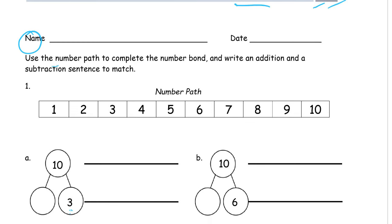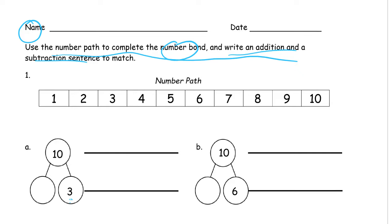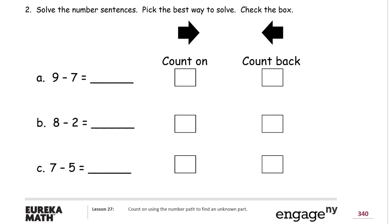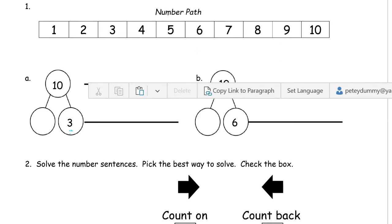Use the number path to complete the number bond, so we have to complete a number bond, write an addition, and a subtraction sentence to match. I'm going to use this to do a little review, because you'll see later on in this page, we have to talk about the difference between counting on and counting back. And I think it's important to do a little review on the difference between the two.